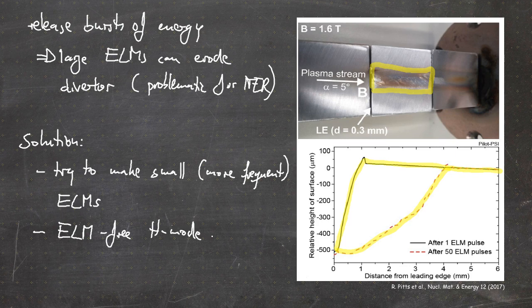That's it for this video, where we talked about transport barriers — narrow radial regions with strongly reduced turbulent transport, leading to a steepening of density and temperature profiles and resulting in an overall increase of the energy confinement time by roughly a factor of two. This is why the corresponding scenario is called high confinement mode or H-mode, which is really important for modern tokamaks. We also talked about the problems of the H-mode: the lack of detailed predictive understanding of the L-H transition threshold, the challenging pedestal physics, and edge localized modes, which can erode the divertor but for which there are mitigation strategies.